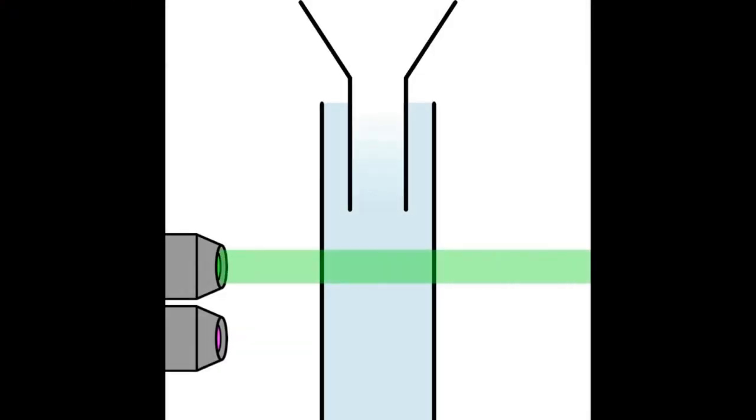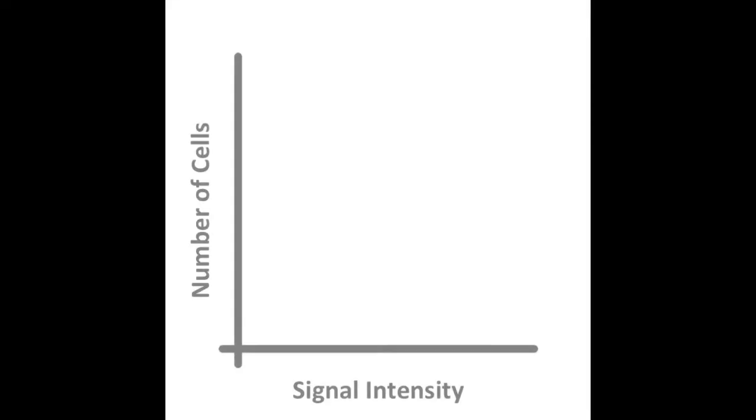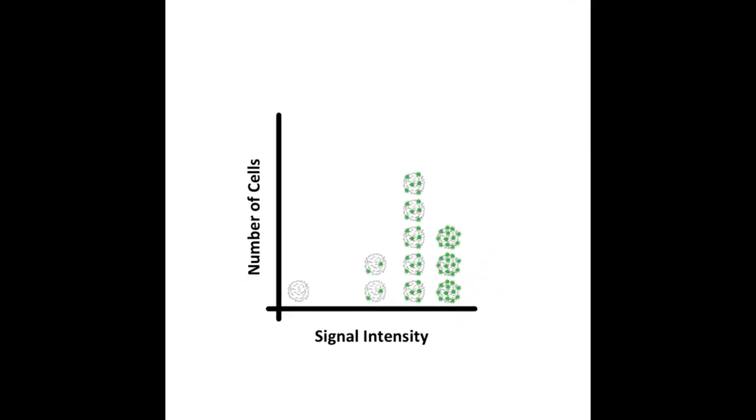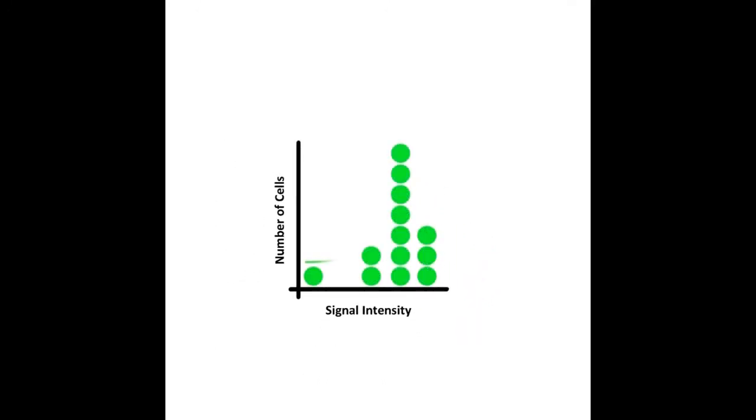Inside the flow cytometer, a mixture of cells labeled with antibodies is channeled into a stream of single cells. As each cell passes through a laser beam, the antibodies attached to the cell light up. The more copies of a protein the cell has, the stronger is the signal. The flow cytometry software records the signal intensity for each cell and builds a graph where each dot represents one cell.